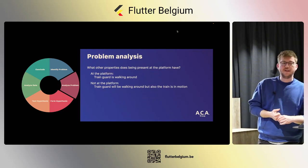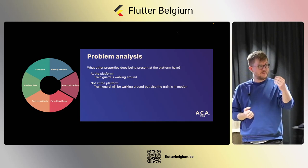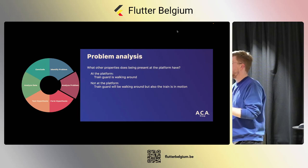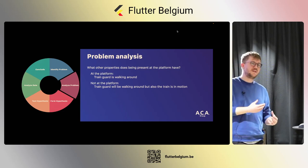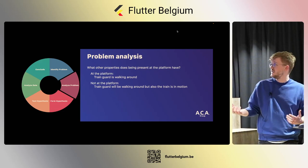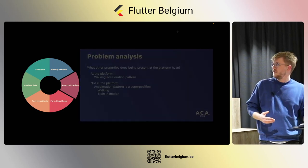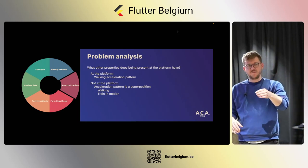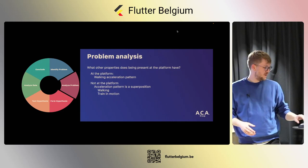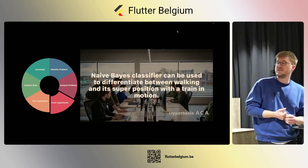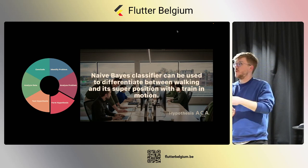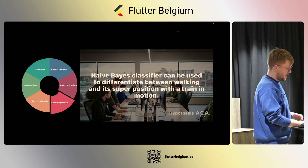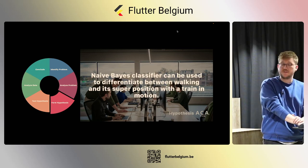We previously defined being at the platform based on coordinates or zero velocity, but now the idea is: the train guard is walking around on the platform while the train is in motion or stationary. We might be able to look at the acceleration of the device he's holding to determine if he's there. This translates to a walking acceleration pattern versus a superposition of walking and the train in motion. Our hypothesis: using a naive Bayes classifier, we can differentiate between walking and walking superimposed with a train in motion.